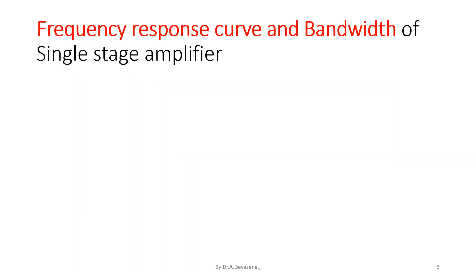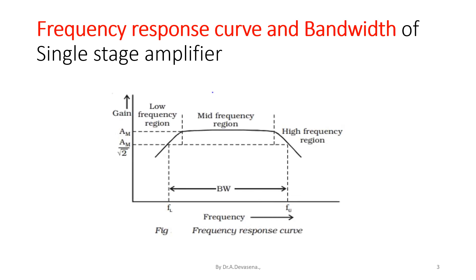The frequency response curve and bandwidth of single stage amplifier is shown below. In this graph, we have the bandwidth, which is obtained with the help of upper cutoff frequency and lower cutoff frequency. The difference between the upper cutoff frequency and the lower cutoff frequency is known as bandwidth, as indicated in this diagram.